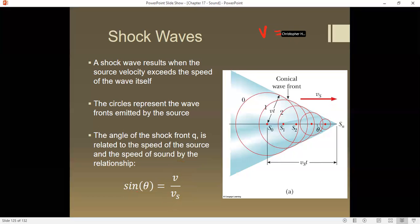If V equals Vs, then sine of theta for one has theta equaling 90 degrees. So just as something's breaking the speed of sound, we would see a flat shock wave right in front of it. As it goes faster, the shock wave becomes more and more narrow as the cone gets thinner and thinner.